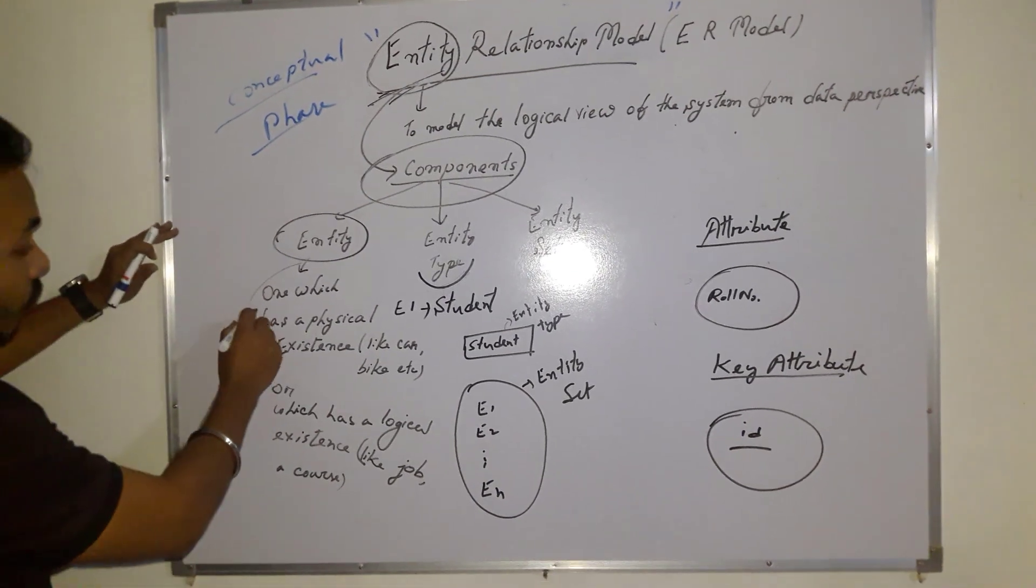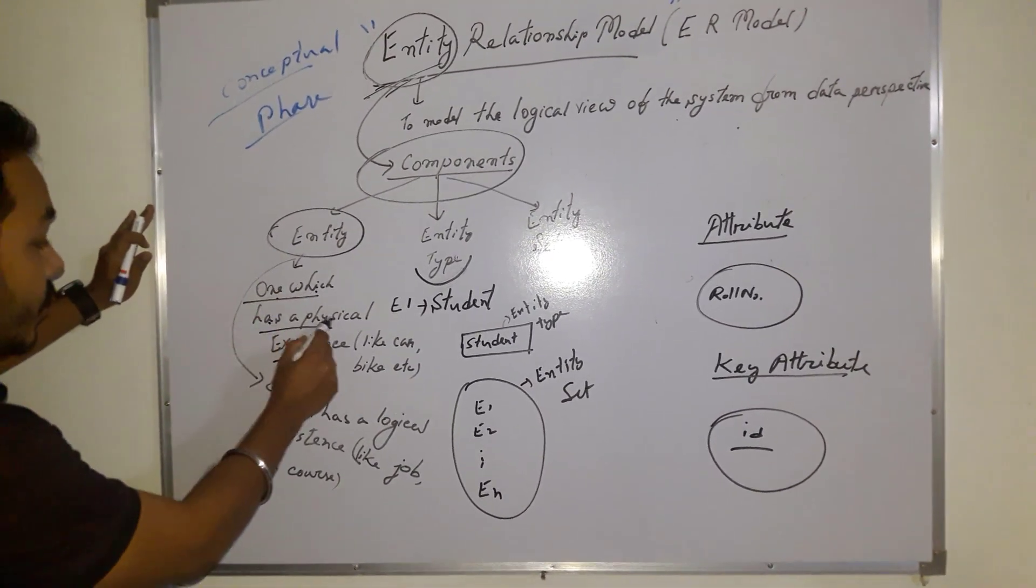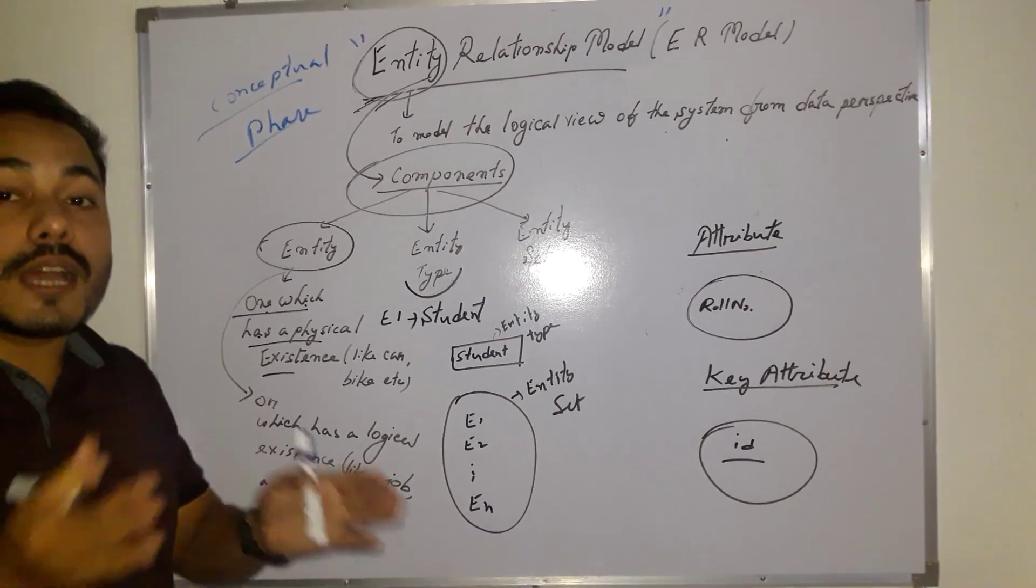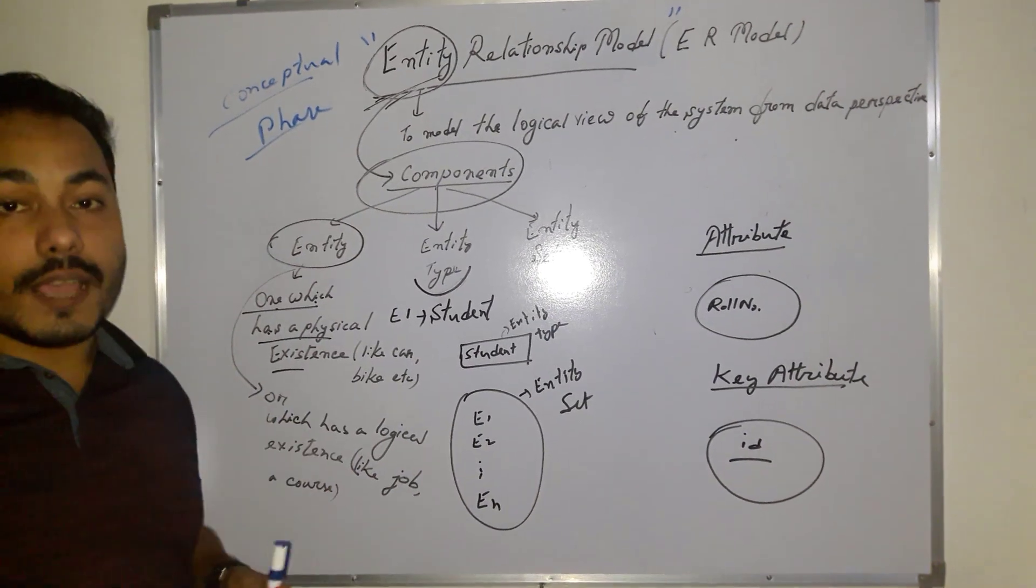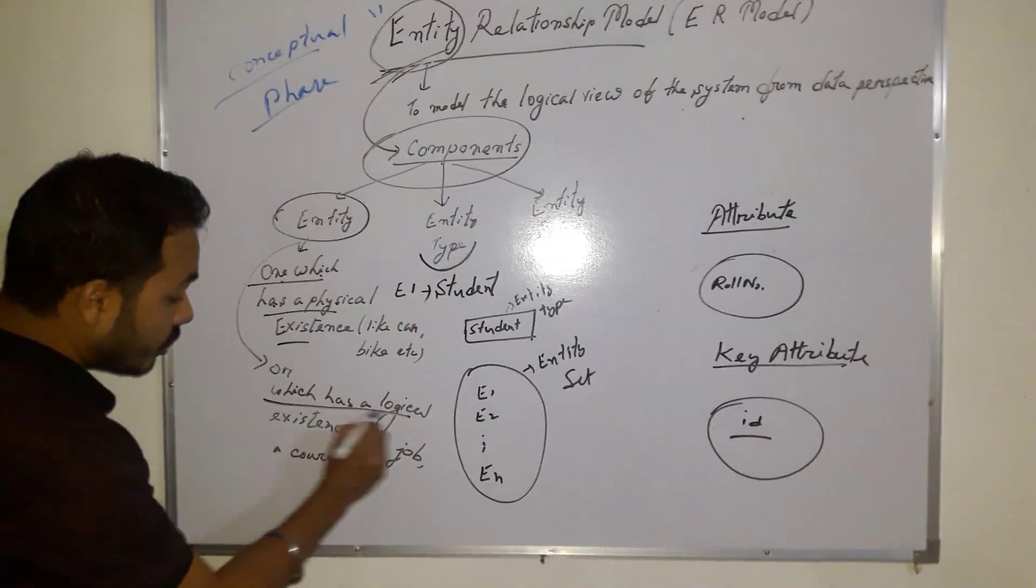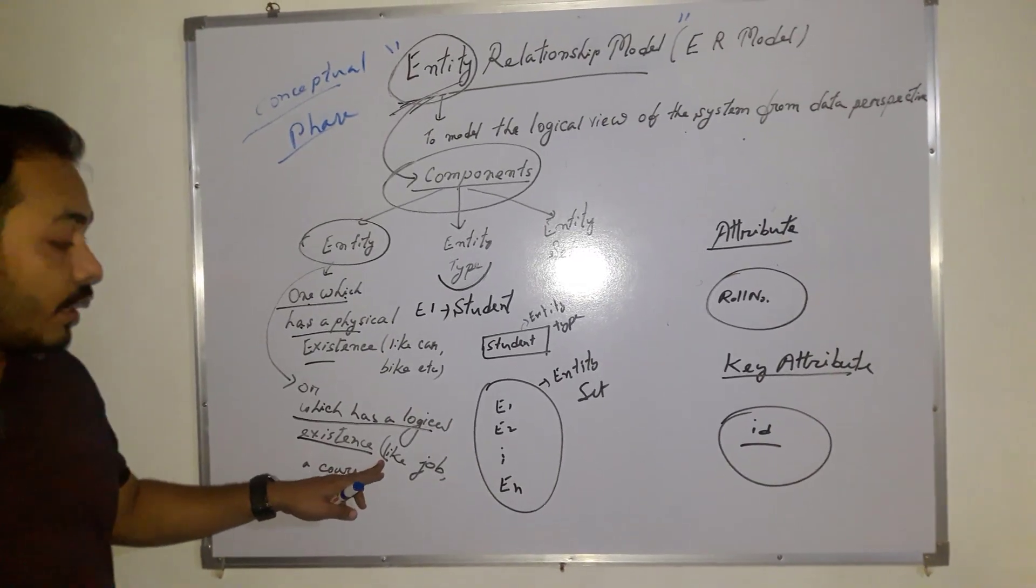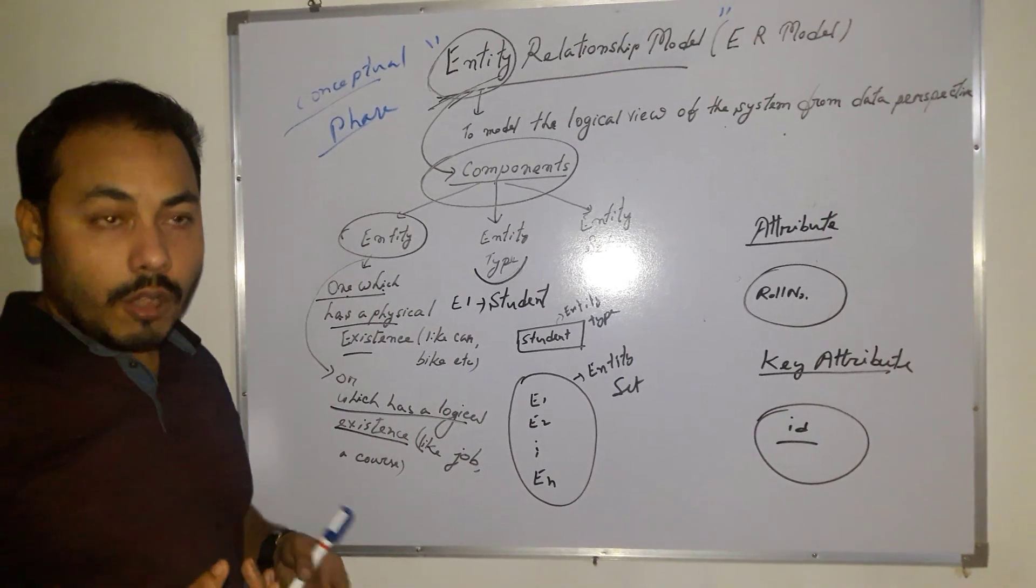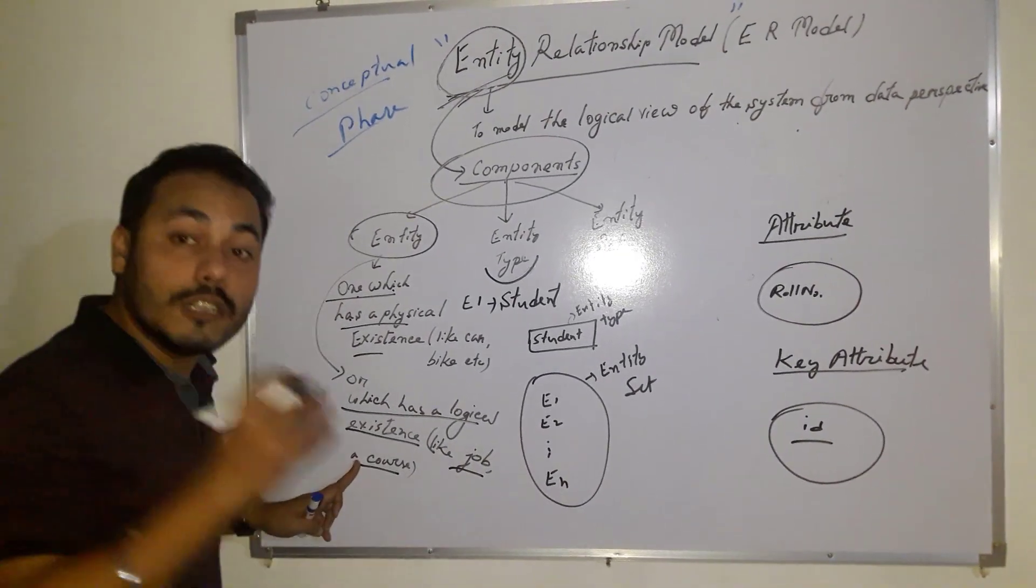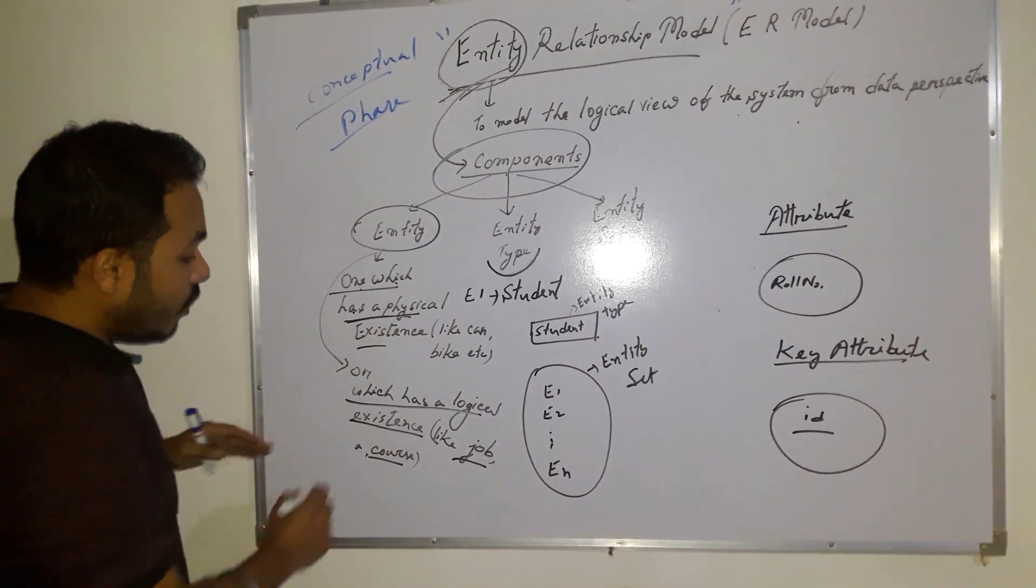So what happens? From there we get two definitions for entity. The first one is one which has physical existence - those objects which have physical existence. For example, your bike, your car, your home - these are coming under real objects because they exist physically, and those are also our entities. Then what about the other definition? The other definition is which has logical existence. What is that logical existence? It doesn't have physical existence, but it exists, like your job. You are currently doing a job, okay? Or suppose you are a student - now you are learning a course. That course has a logical existence, and that job has a logical existence. So they are also our entities.